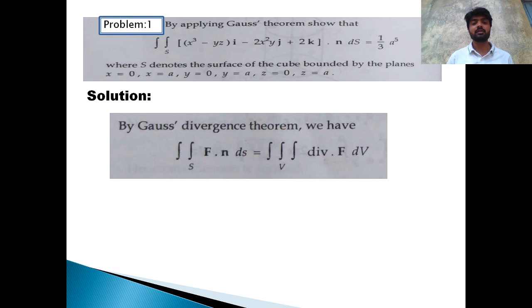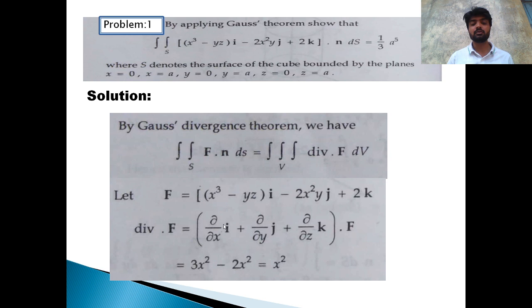Let's go to the solution. By Gauss theorem, we have the surface integral over S of F dot N into dS is equal to the volume integral over V of the divergence of F into dV. Here, we are going to compare the given expression to F and R, so F equals R.